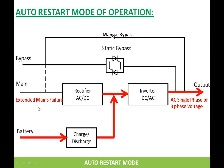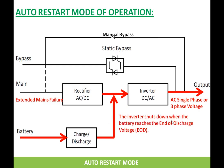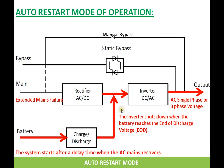The other mode is the auto restart mode. The UPS goes to this mode when incoming mains fails for an extended amount of time. When mains fails, the UPS transfers to battery, but the battery can only support the UPS for a limited time depending on battery age. When the battery voltage reaches the end-of-discharge voltage — for a 12V battery that is 10.5V — the UPS detects this and shuts down the inverter, so UPS output is no longer available. When power recovers, there is a delay before switching on the inverter, because the battery is completely discharged and takes more current for charging. This delay prevents the UPS from tripping, and this is the auto restart mode.